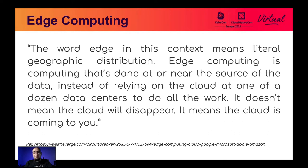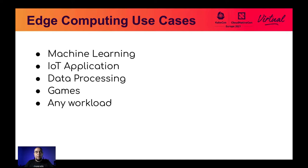Edge computing refers to being close to the source of data and wanting to process information there — for example, with your smartphone. The cloud is not disappearing; rather, the cloud is coming to you. Edge computing refers to distributed geographic computing. Some use cases include machine learning, IoT applications, data processing, games, or any workload.